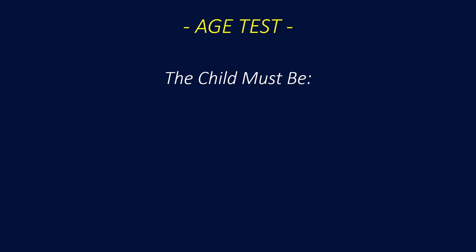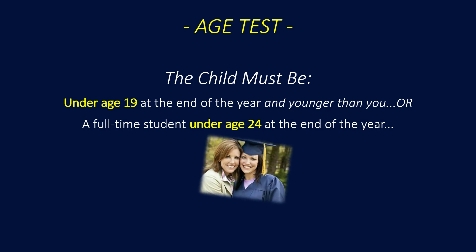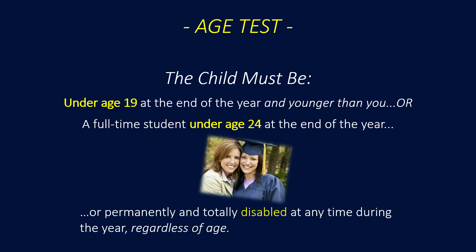Next, the age test for a qualifying child. The child must be under age 19 at the end of the year and younger than you, or a full-time student under age 24 at the end of the year, or permanently and totally disabled at any time during the year, regardless of age.